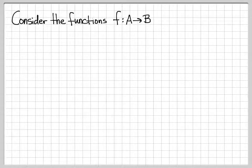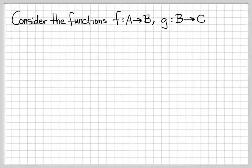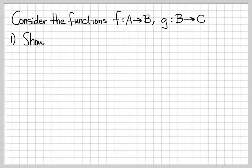Let's work another example having to do with 1-to-1 and onto. In this example, we're going to work with two functions: the function f, which is a function from A to B, and the function g, which is a function from B to C. We're going to prove a few different things. First of all,